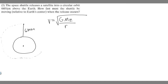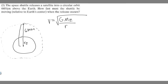We're solving for v, but we need r to do it. This distance here is the radius of the Earth. R in this problem is the total distance from the satellite to the center of the Earth — essentially the full radius of the orbit. So r is what we need to solve for first.